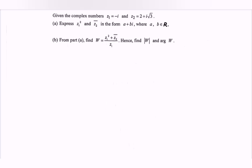Part a: Express z₁ squared and the conjugate of z₂ in the form a plus bi, or we can say Cartesian form.